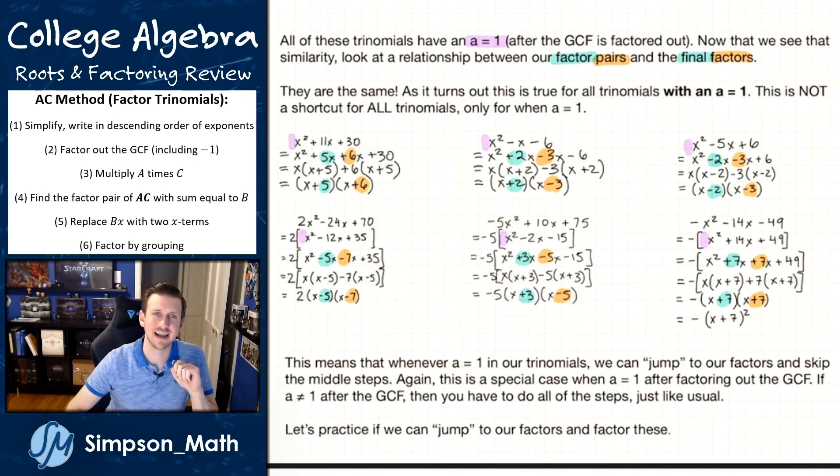All of these trinomials have an A value of one. So in terms of the ax² + bx + c form, A equals one.